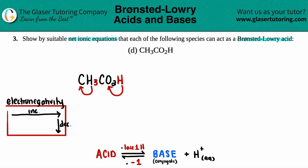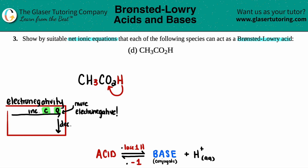On the periodic table we have carbon, which is over here — here's my C — and then next door is oxygen. Oxygen is more electronegative. So hydrogen is going to be lost from the oxygen side. It's going to be this hydrogen that gets lost; it's not going to be one of the hydrogens bound to carbon, which is less electronegative.